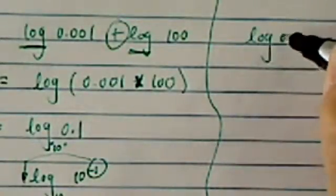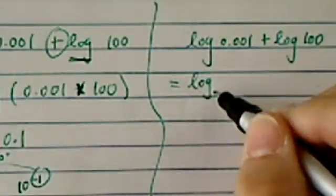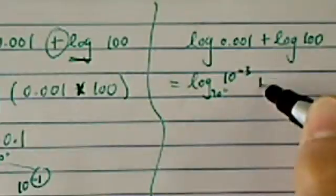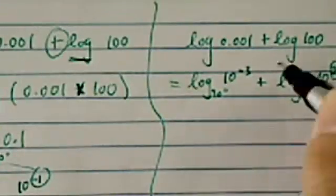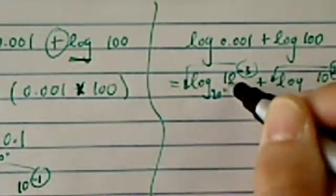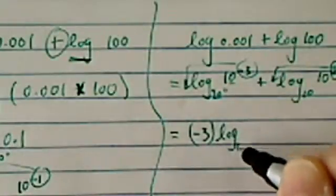Another way is to actually just solve each one. 0.001 plus log base 10 of 100. This one is equal to log base 10, since we're not writing it, is 10 to the minus 3 plus log base 10 of 10 to the 2. Let's drop each one of the hats in the front. And when it's matching, it becomes 1.